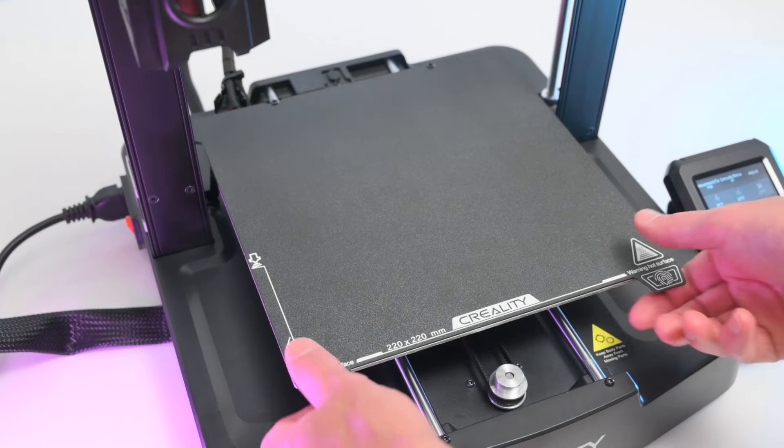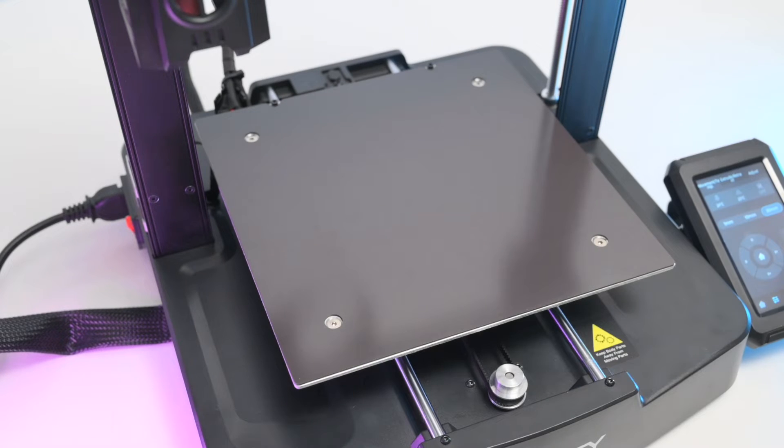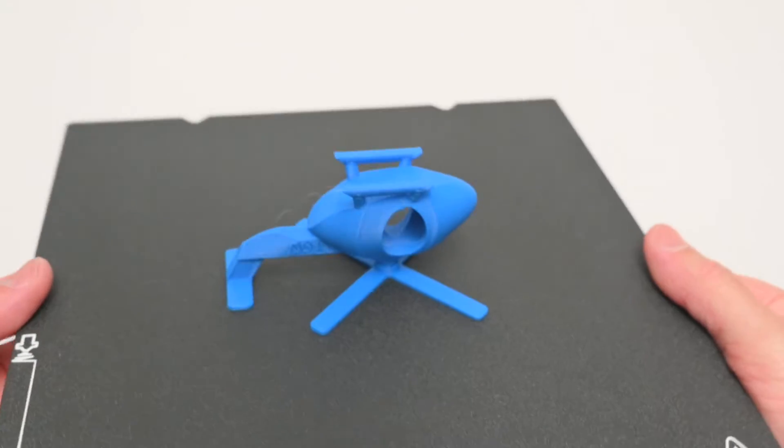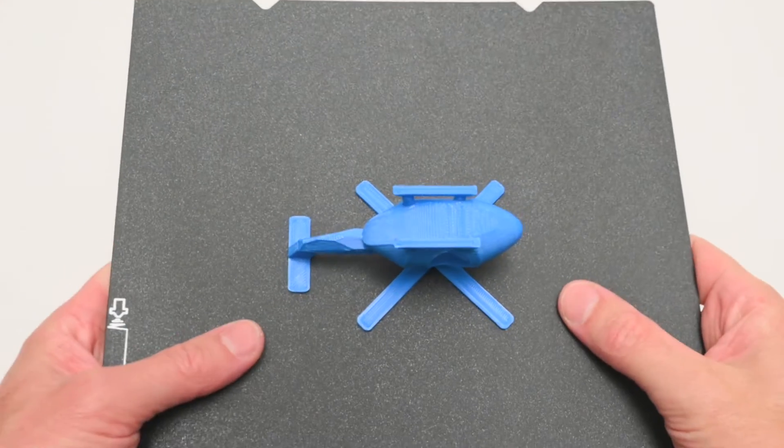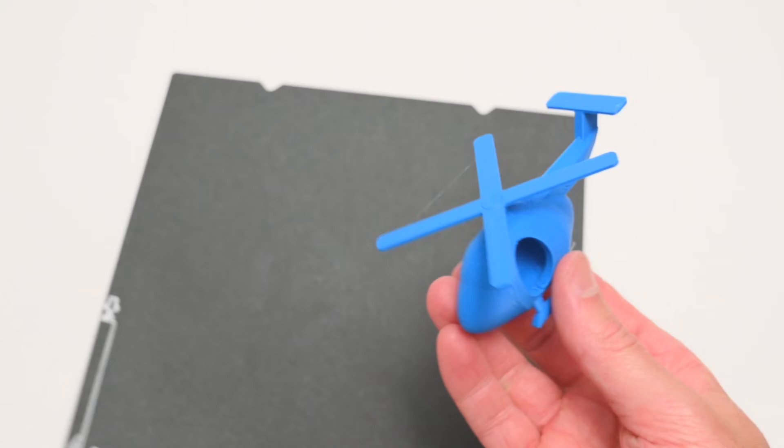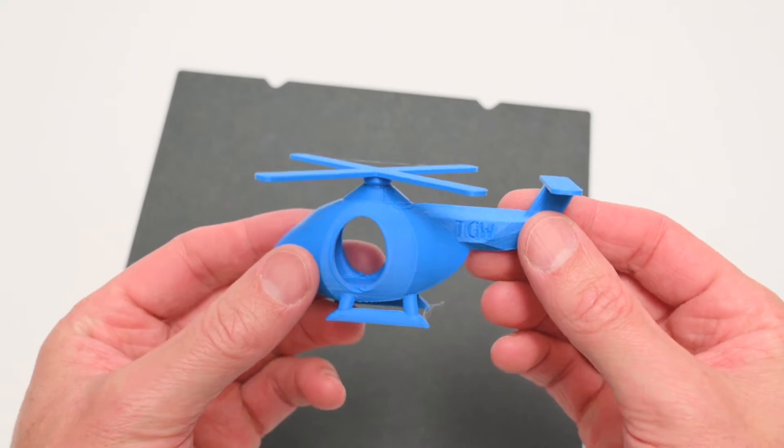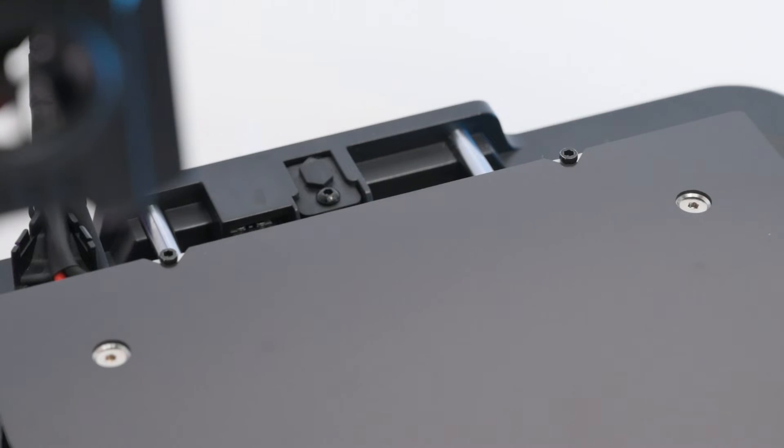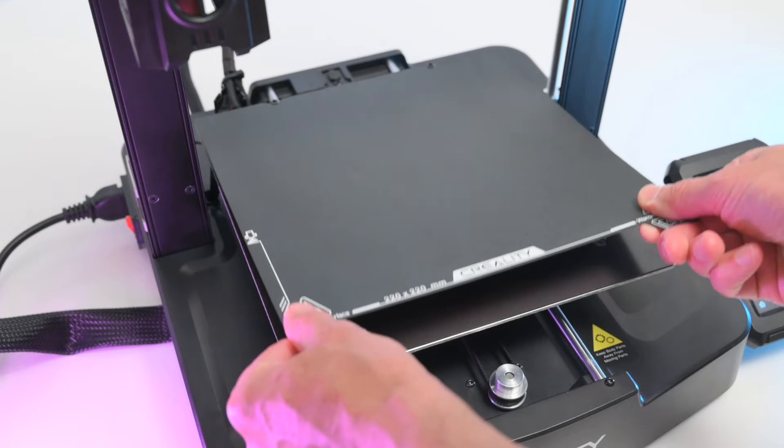The bed has a removable magnetic PEI steel build surface and I found this works really well and they are one of my favourite printing surfaces. There's no need to use glue sticks and prints adhere well to the platform and then are easily removed when finished. At the back of the print bed there are handy alignment bolts which help align the build platform when reinstalling.